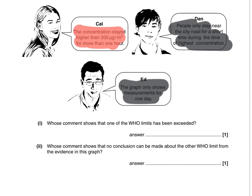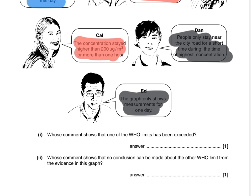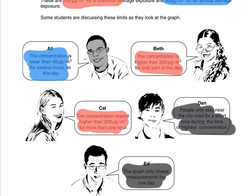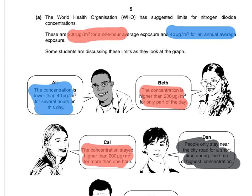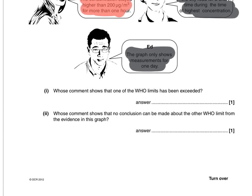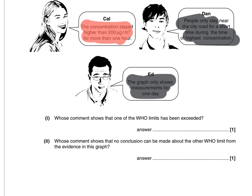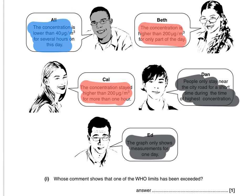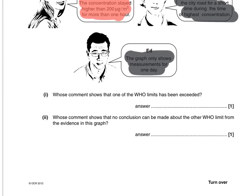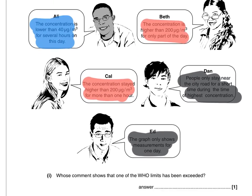The question asks whose comments show that one of the WHO limits has been exceeded — so I can ignore Ed and Dan and look at Ali, Beth and Cal. I cross-check with the two limit statements and see which one suggests the limit has been broken. Then whose comment shows that no conclusion could be made about the other WHO limit from the evidence in this graph — I'll probably be thinking about Ed and Dan at that point, because the other statements are about data.